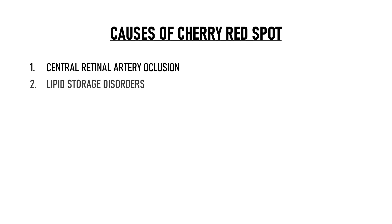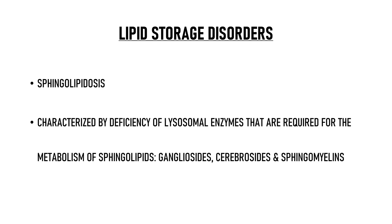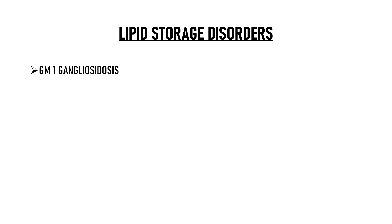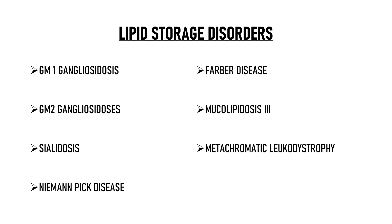Cherry red spot is also seen in various lipid storage disorders, collectively known as sphingolipidosis. They are characterised by the deficiency of lysosomal enzymes required for the metabolism of sphingolipids — basically gangliosides, cerebrosides, and sphingomyelins. These sphingolipidoses include GM1 gangliosidosis, GM2 gangliosidosis, sialidosis, Niemann-Pick disease, Farber's disease, mucolipidosis type 3, metachromatic leukodystrophy, and galactosialidosis. Just like CRAO, in these conditions the retina gets a pale colour except at the fovea, which appears reddish brown. But the pathophysiology is different from that of CRAO.